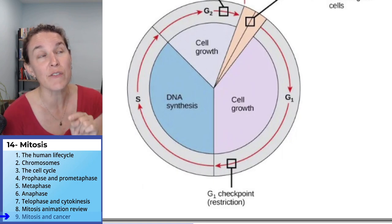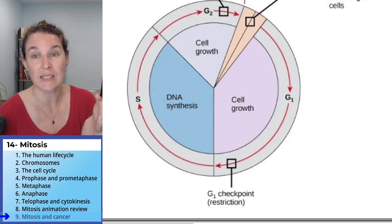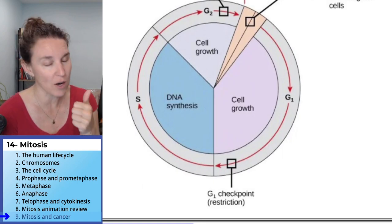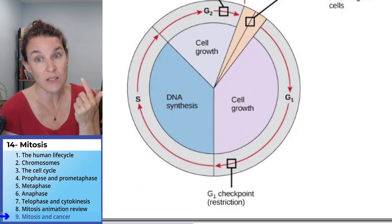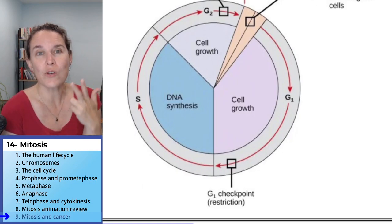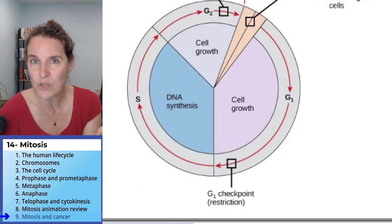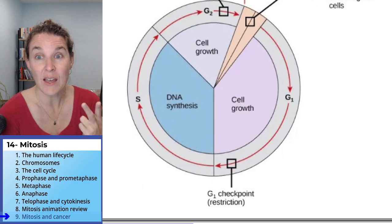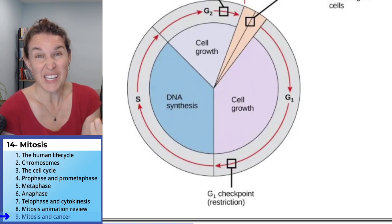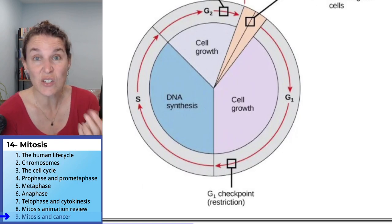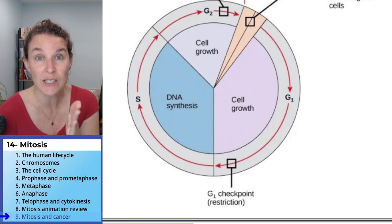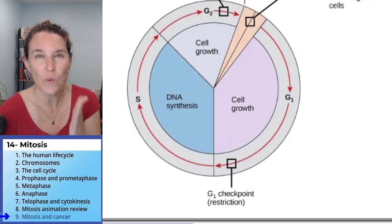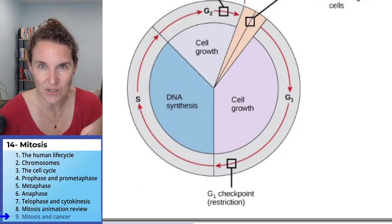Because if you replicate cells that are missing DNA or have mutations, or you replicate when you're not supposed to, disease results. And that's what cancer is — cancer is a failure to accurately or correctly regulate the cell cycle.